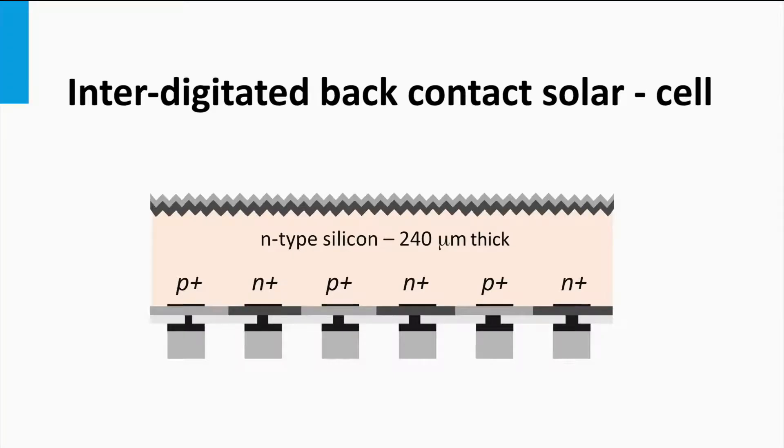Back contacted solar cells use, in contrast to the PEARL concept, N-type float zone monocrystalline silicon wafers. An interdigitated back contact is lacking one large P-N junction. Instead, the cell has many localized junctions.